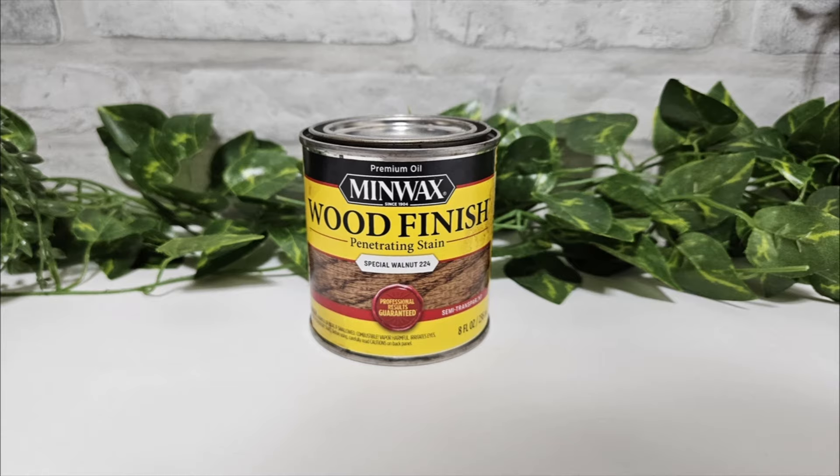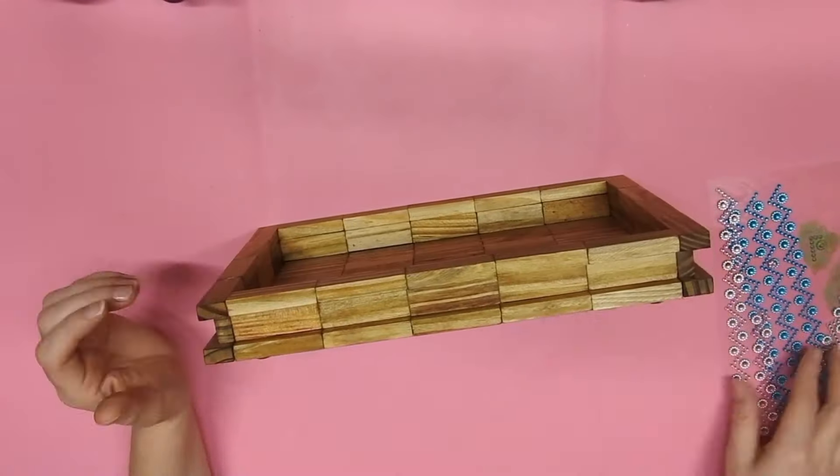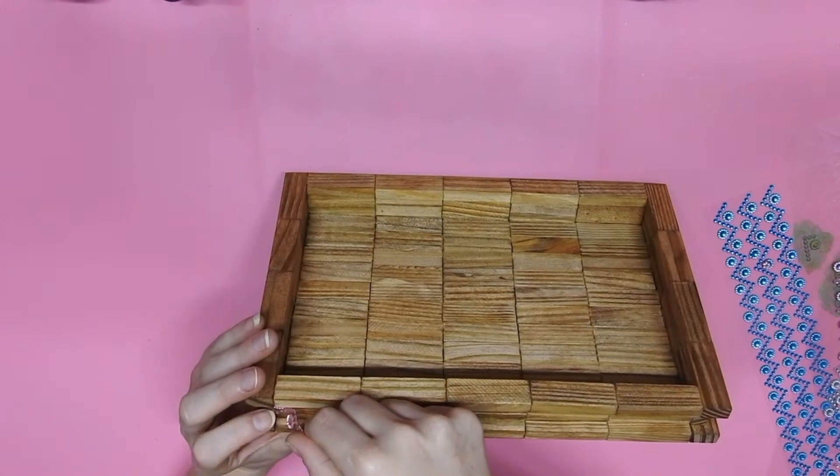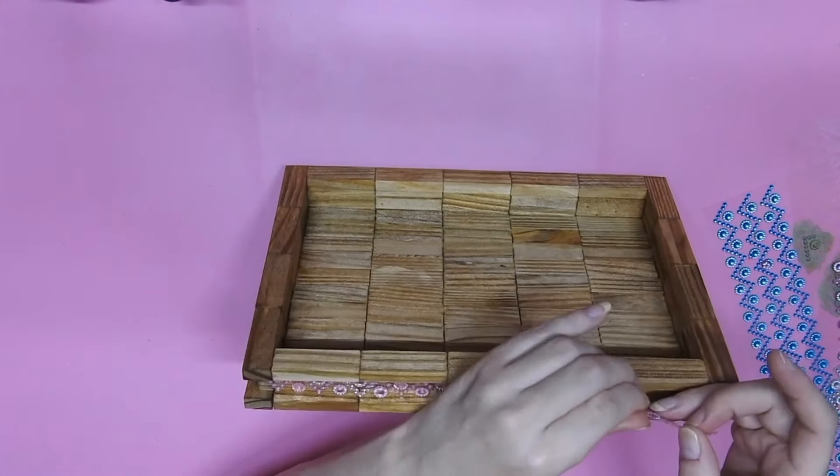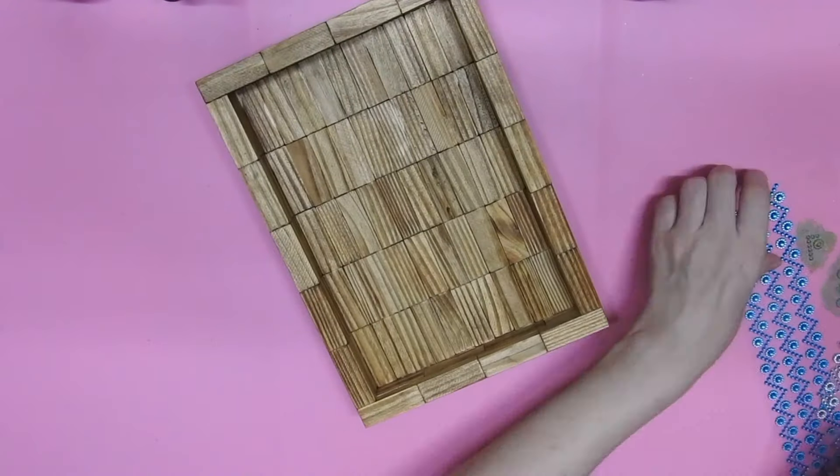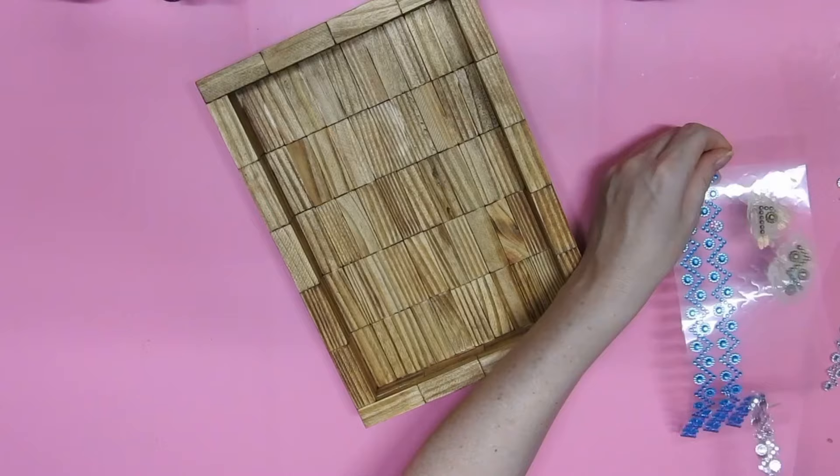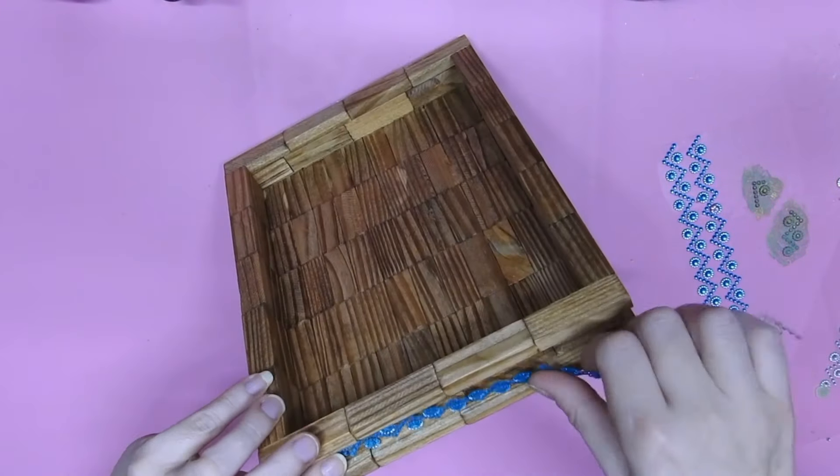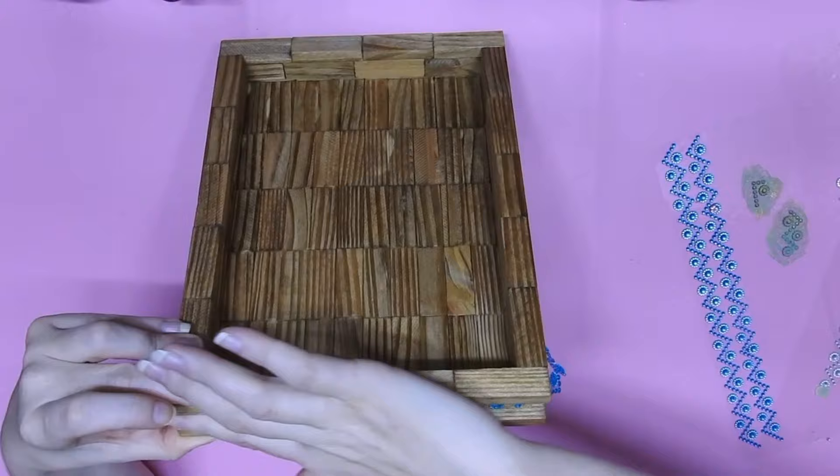I stained it with the Minwax Special Walnut. I have some of the Dollar Tree stickers here so I am just going to stick them in this space. On the tree you can also make this tree bigger if you want. I just didn't use more blocks because I have more videos to make but you could definitely make it much bigger. So I'm just going to stick them all the way around.